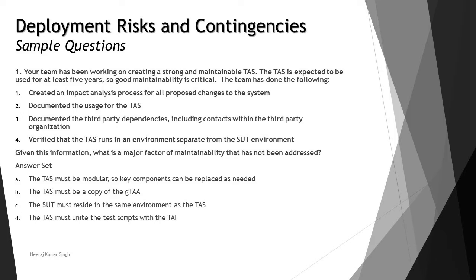Most of the listed actions have been done as part of maintenance, but there is something still missing. Looking at the options: option A says the TAS must be modular so key components can be replaced as needed. Option B says the TAS must be a copy of the generic test automation architecture (gTAA). However, a TAS is different from the automation architecture — it is a tool and must be distinct from the architecture.